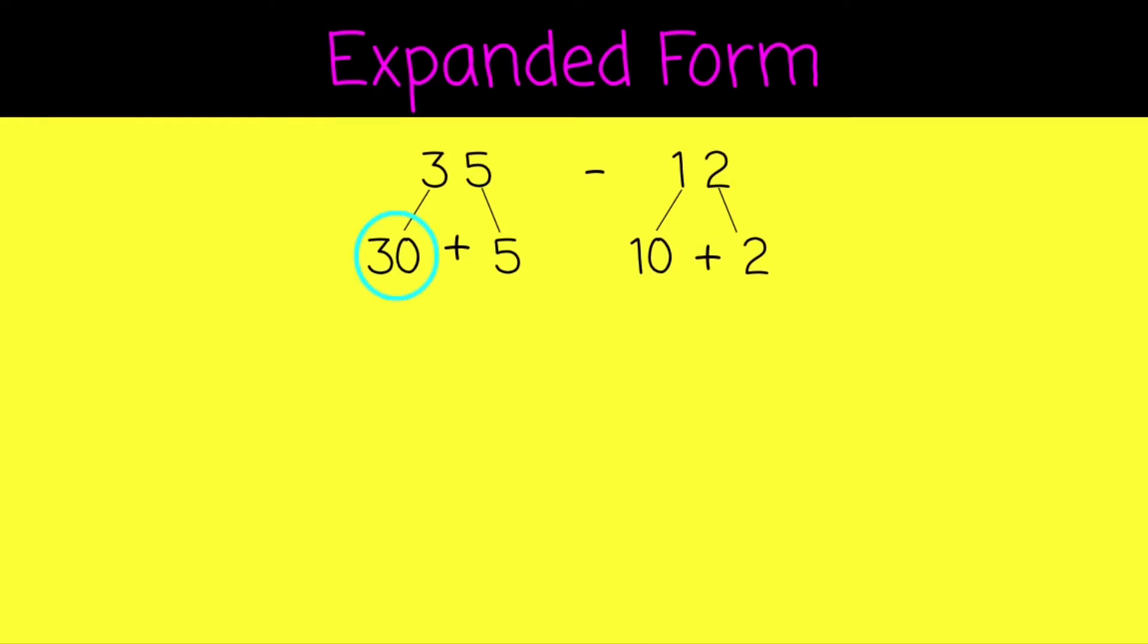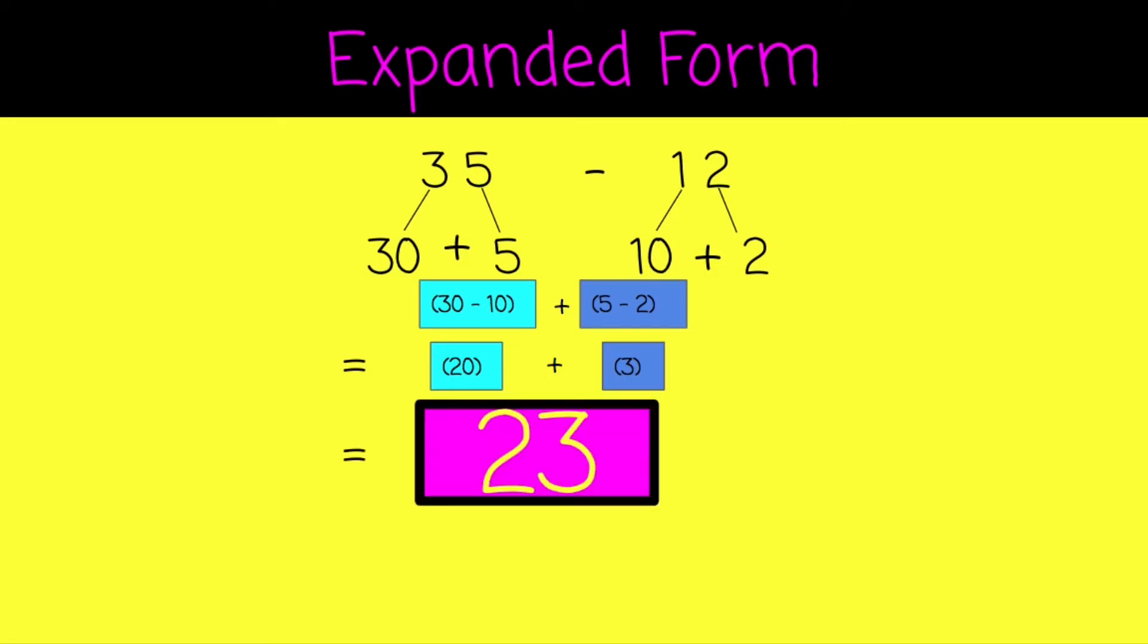30 take away 10. Then we can put that addition symbol there because the subtraction is taking place within the parentheses. Now our ones, 5 take away 2. That leaves us with 20 and 3 for a final difference of 23.